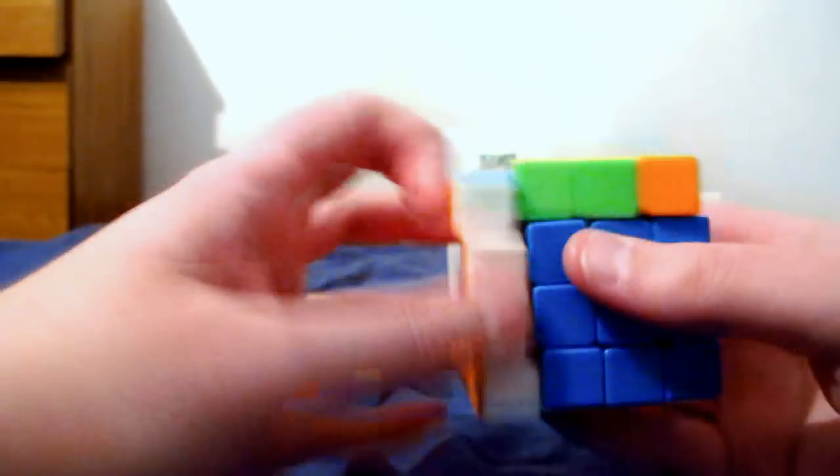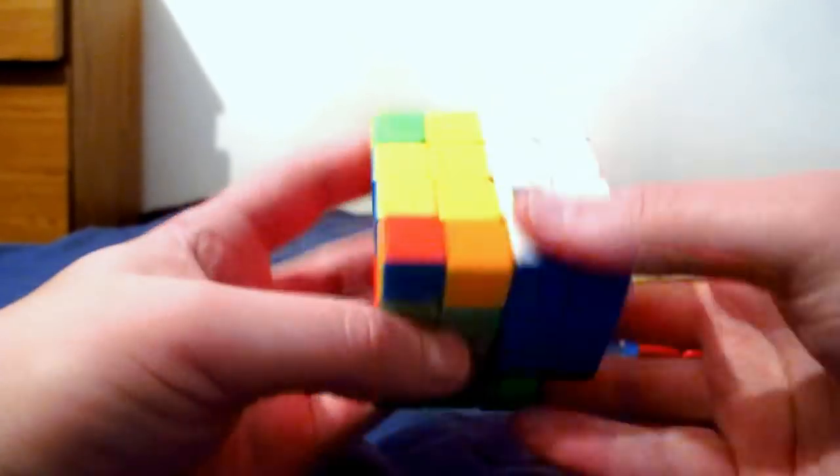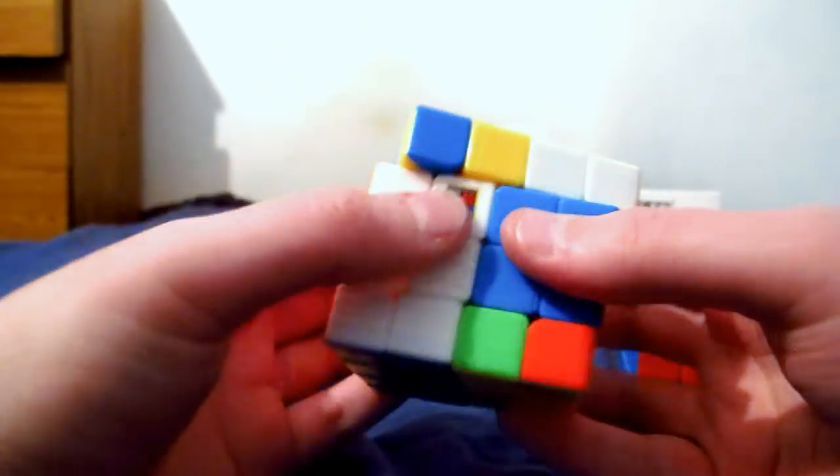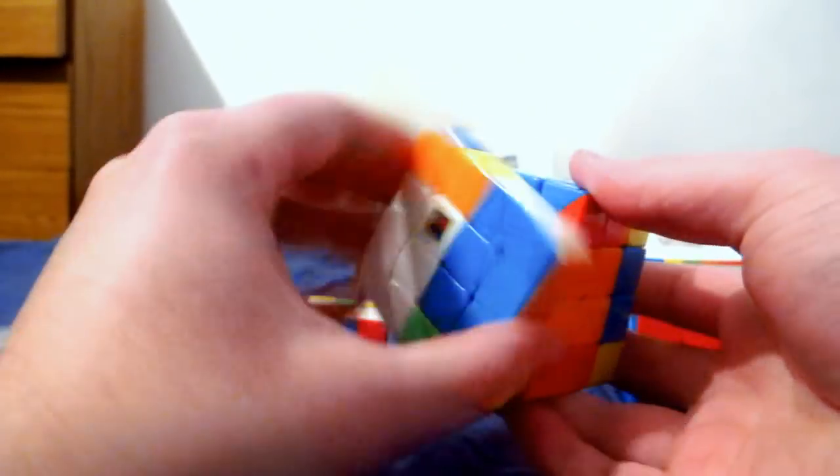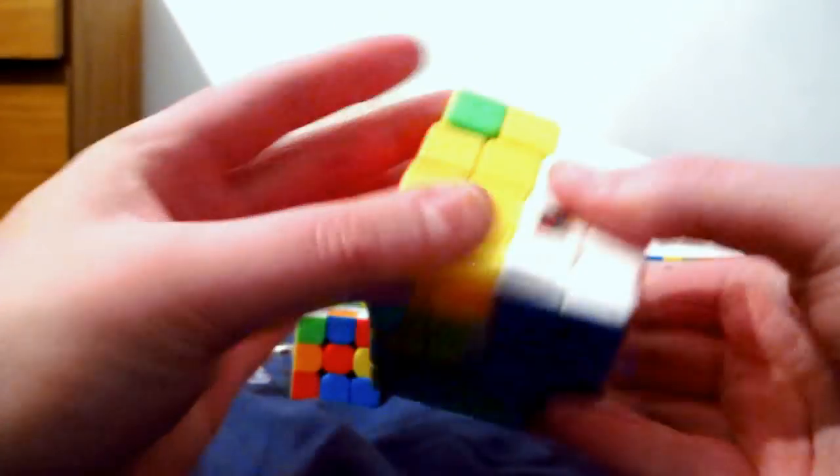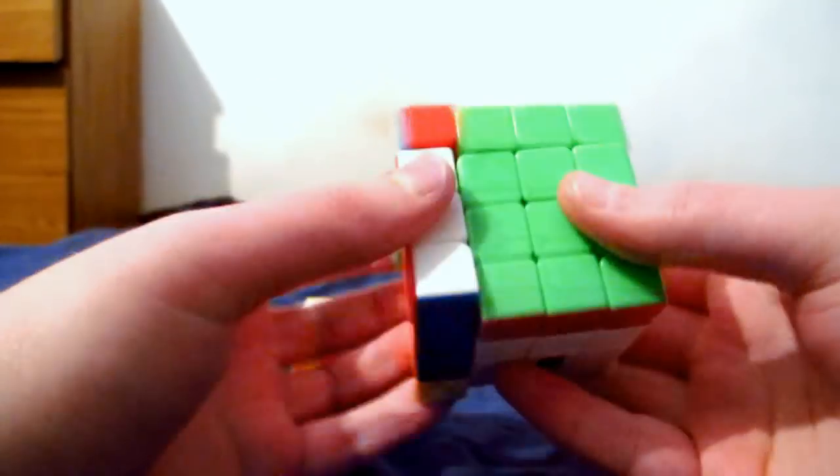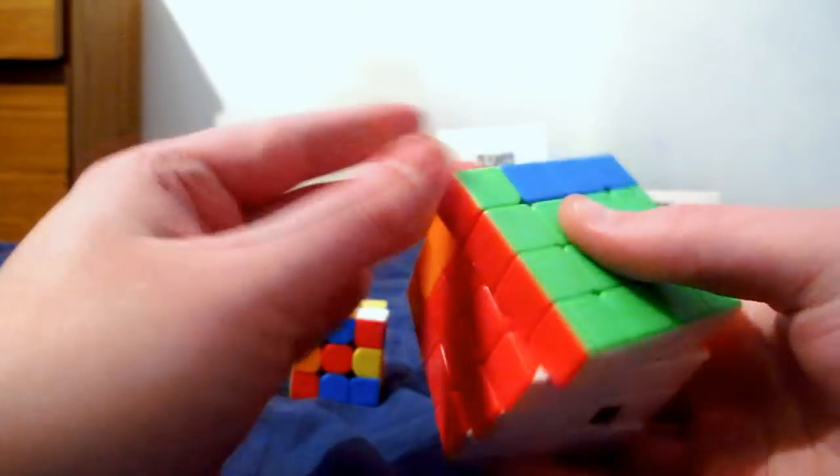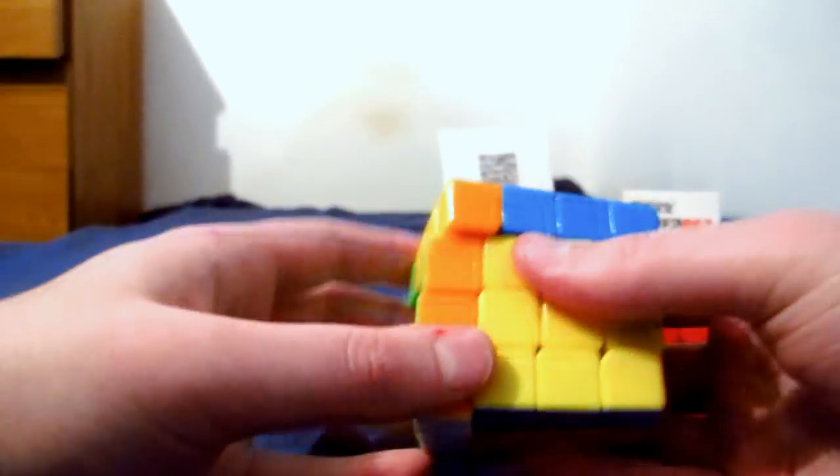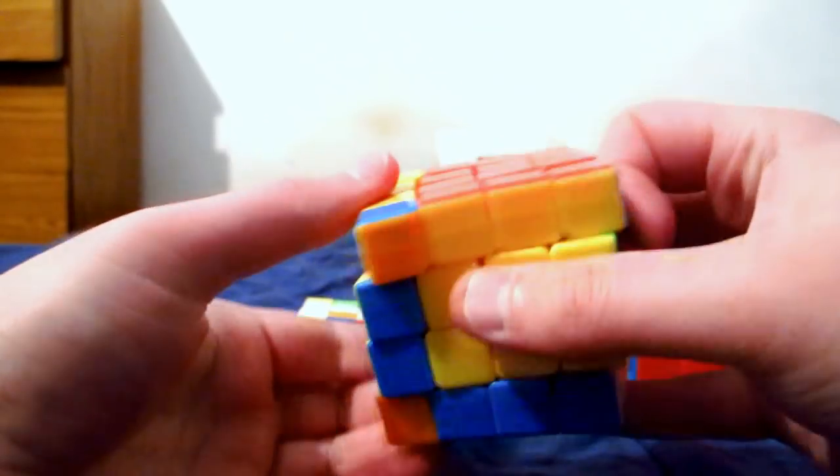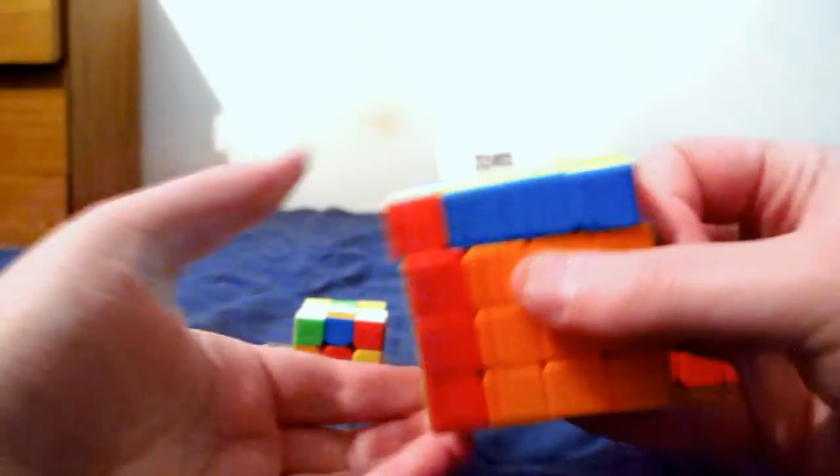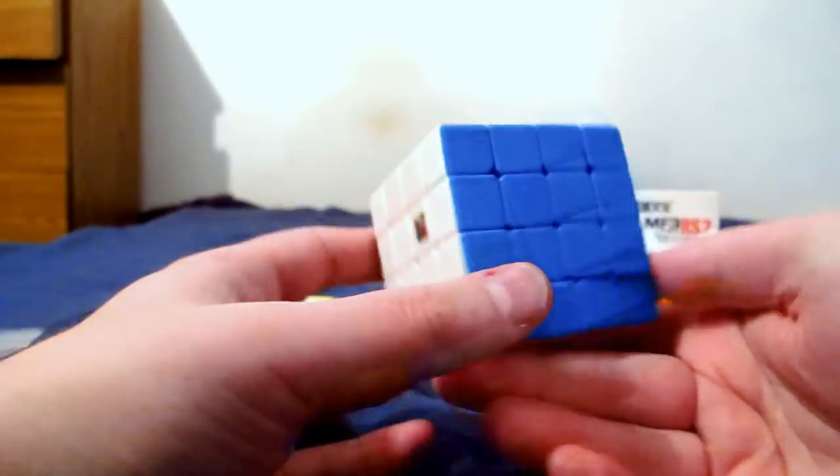Oh I got parity. This is the thing that cannot happen on a 3x3 when you're solving it. At the 3x3 stage it's like one edge piece being flipped and that can not happen on a regular 3x3. That's an illegal position because you cannot just have one corner flipped or anything like that.